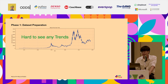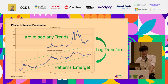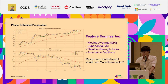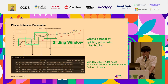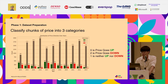When analyzing regular prices, it might be challenging to clearly classify whether the trend is upward or downward. To address this problem, we apply a log transform, making it easier to identify whether prices are increasing or decreasing. We also modify the price data by adding additional features, which are indicators that we normally use in technical analysis. We then divide this price data into chunks and classify those chunks into three categories: upward, downward, and neutral trends.